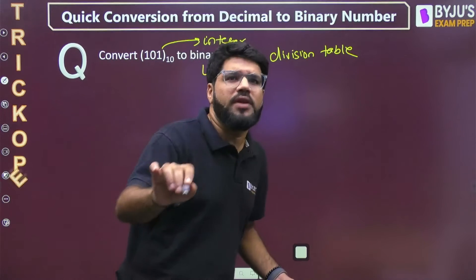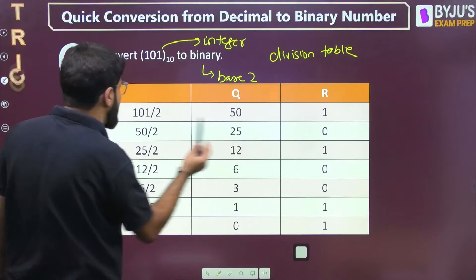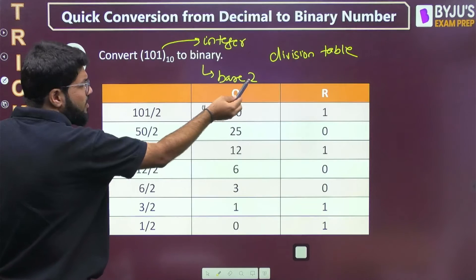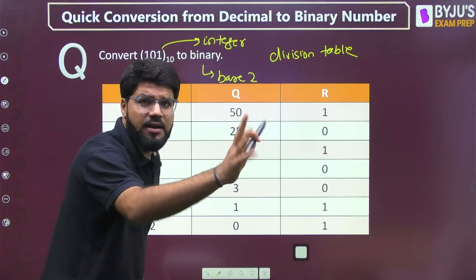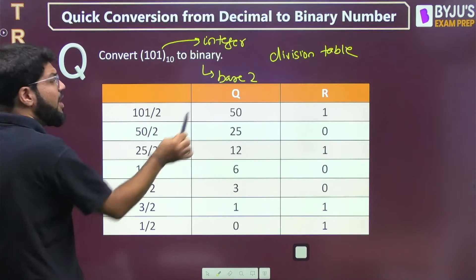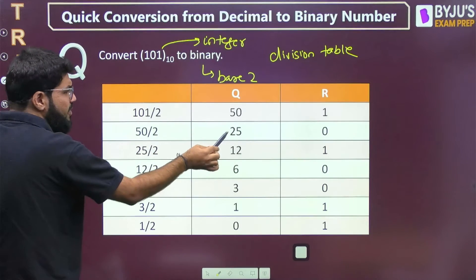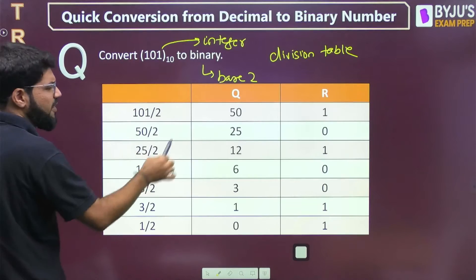I am going to introduce a new trick, but first a quick recap of the division table. What we do: 101 divided by 2, the answer is quotient and remainder separately. 101 divided by 2, quotient is 50, remainder is 1. Then 50 divided by 2 is 25 with no remainder, then 25 divided by 2, et cetera.